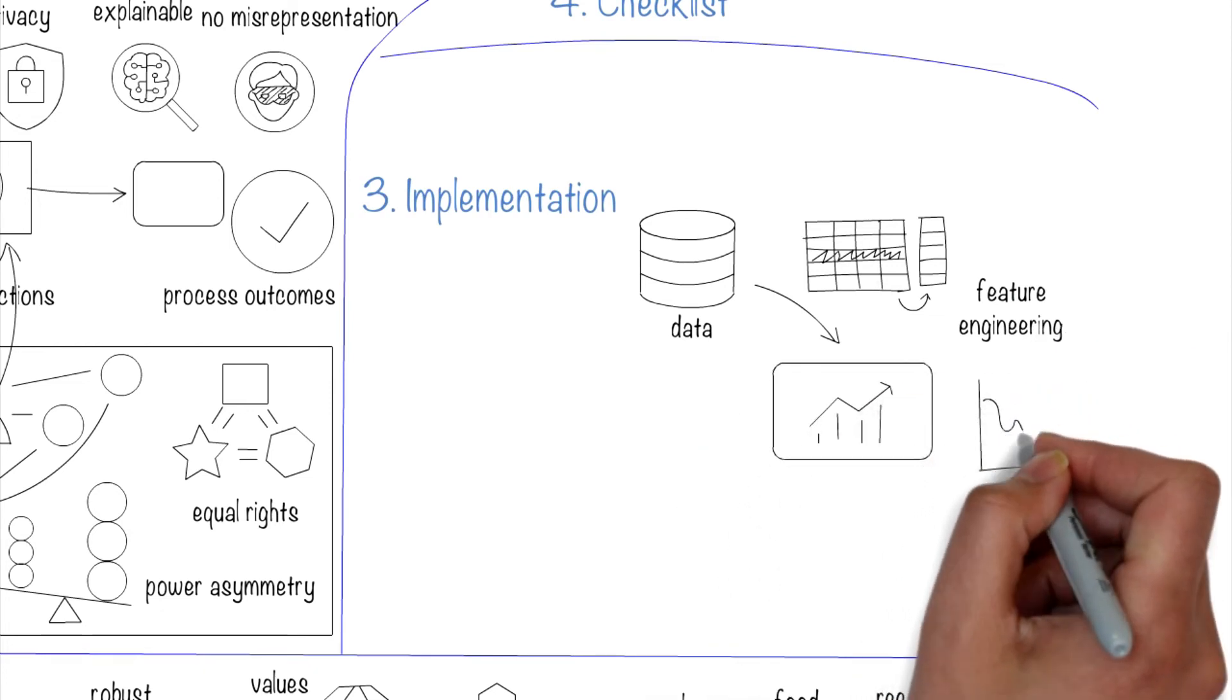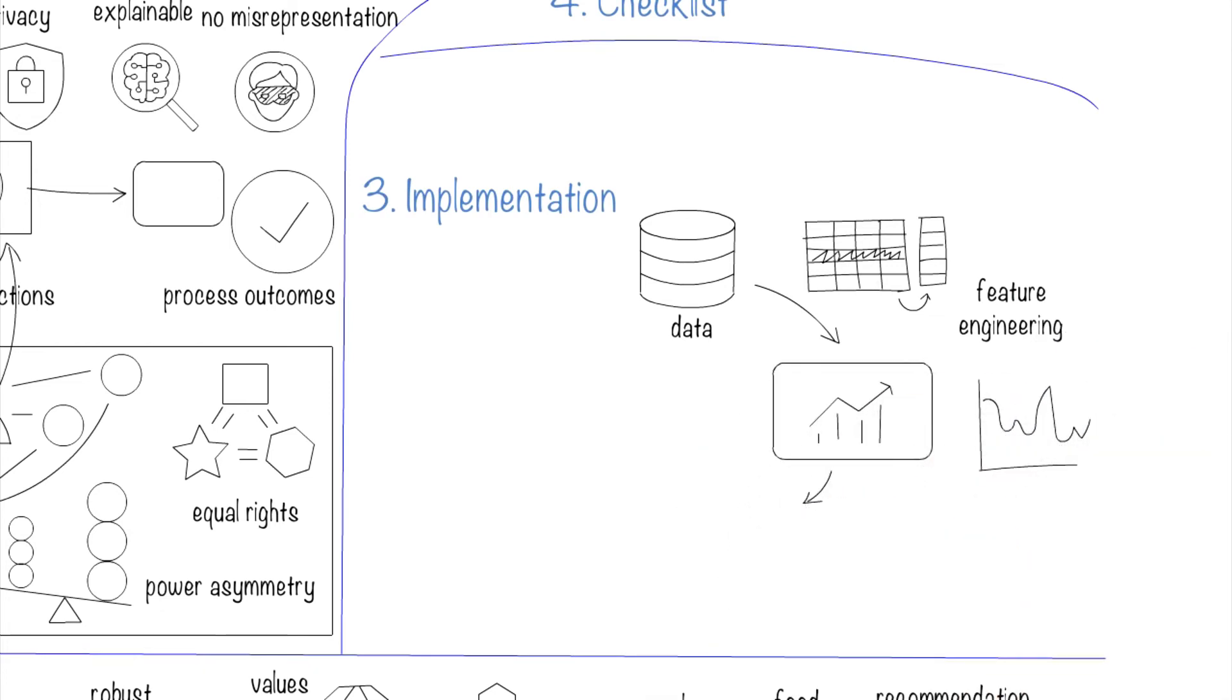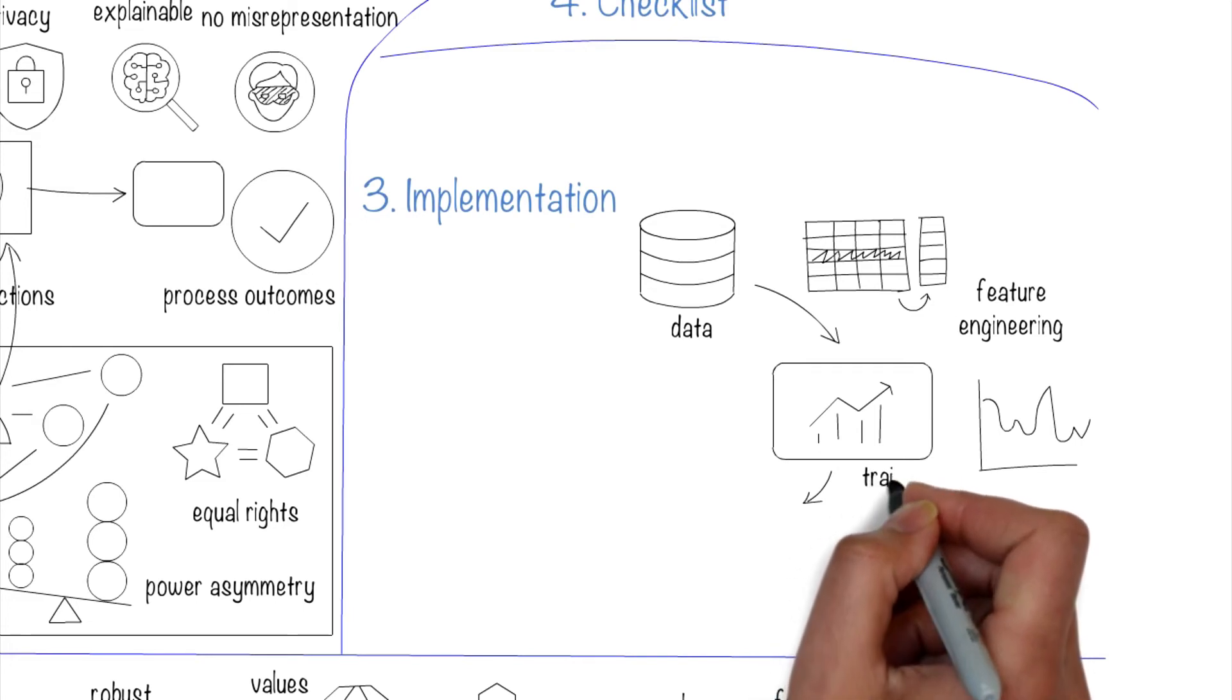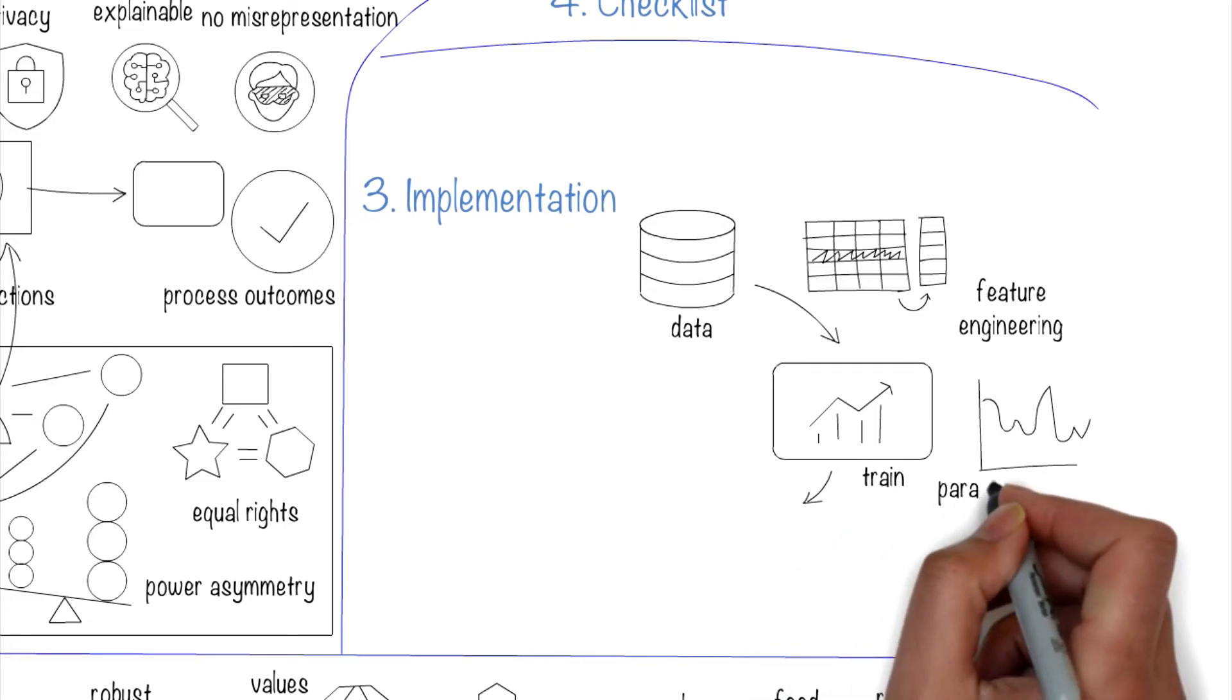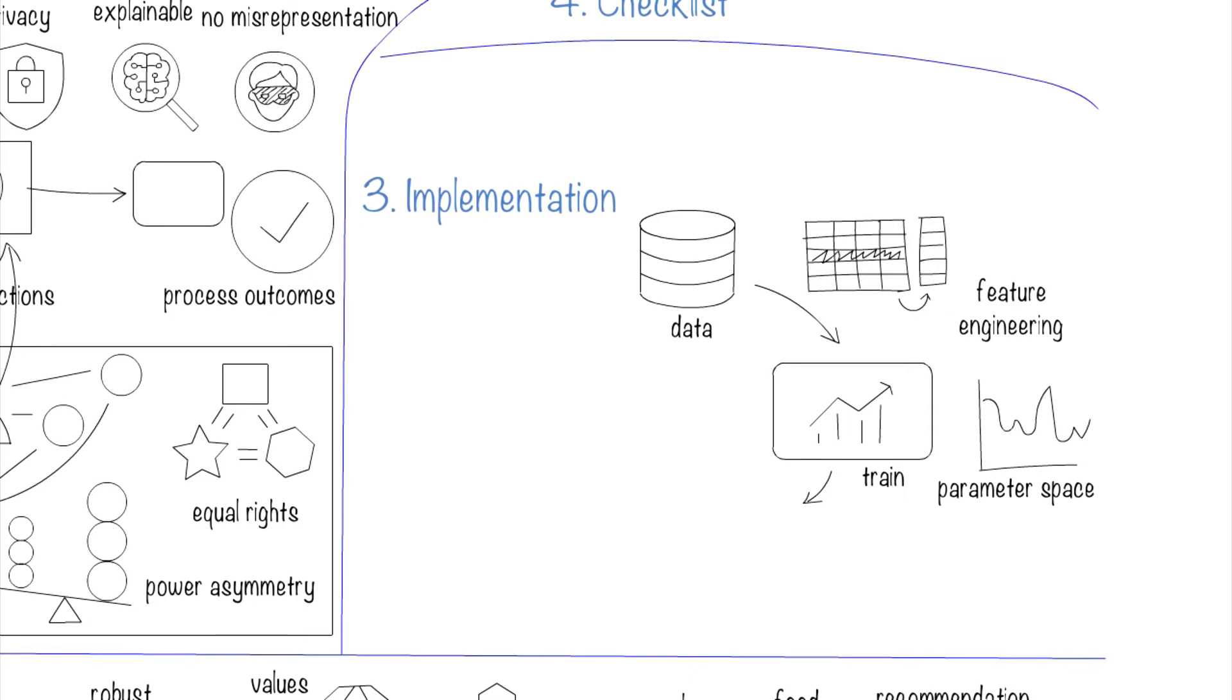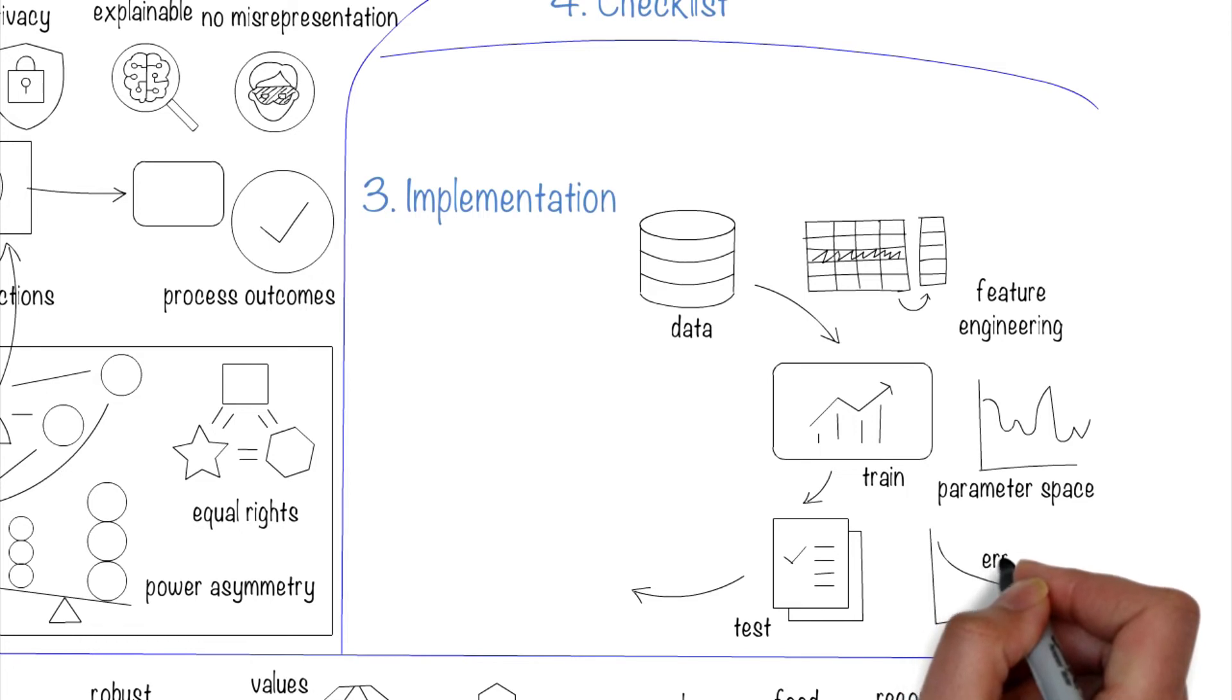In the training step, we use data to train different types of models and explore the parameter space to see which parameters give the best performance. And then, in the testing step, we validate the model with the data that the system has not yet seen, to ensure that the model can generalize over data and reduce errors.